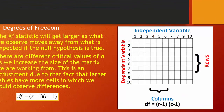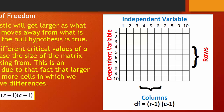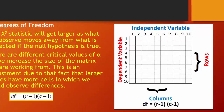For example, in a table with four categories of the independent variable and three categories of the dependent variable, degrees of freedom = (3 − 1) × (4 − 1) = 2 × 3 = 6. Or if the independent variable has five categories and the dependent variable has four categories, then degrees of freedom = (5 − 1) × (4 − 1) = 12.